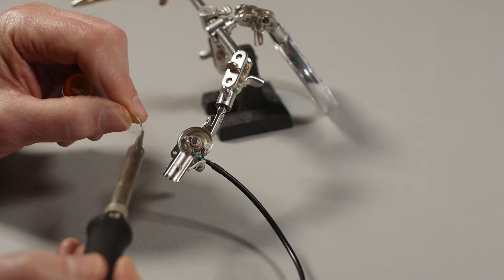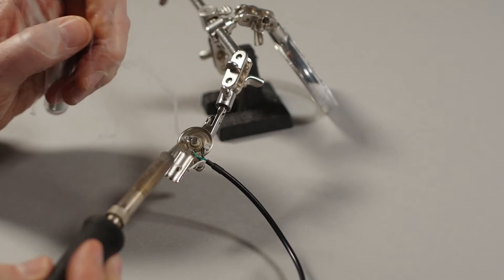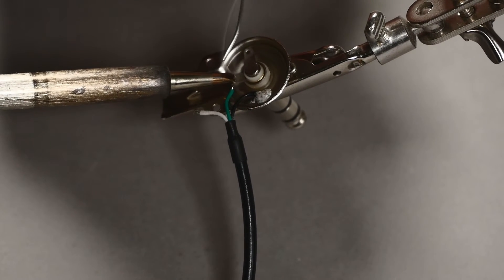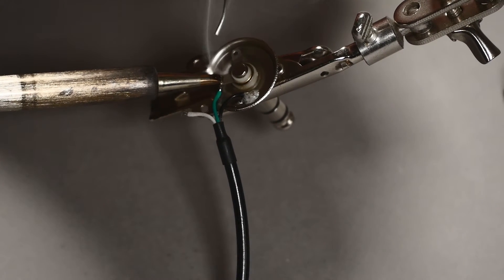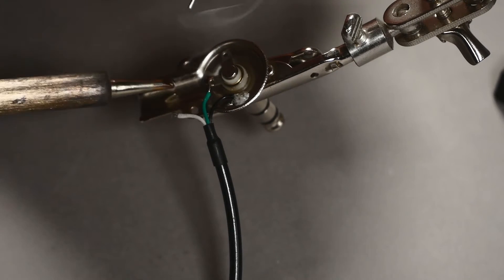Apply heat to the middle pierced terminal with the soldering iron while feeding solder into the joint until there is a discernible smooth flow of solder on the wire and terminal.